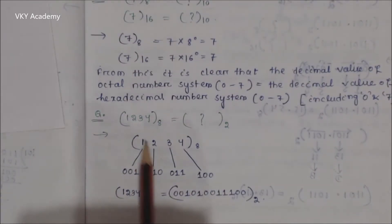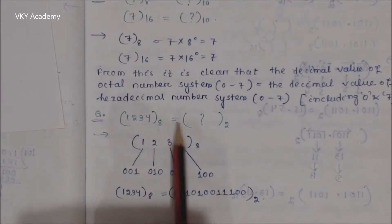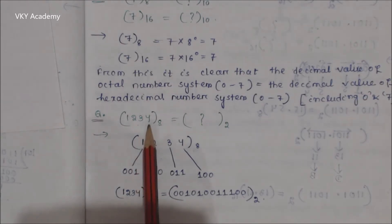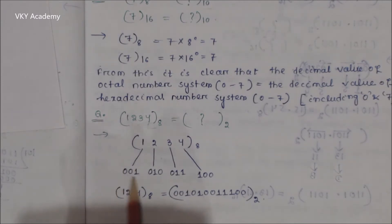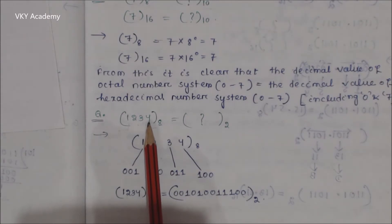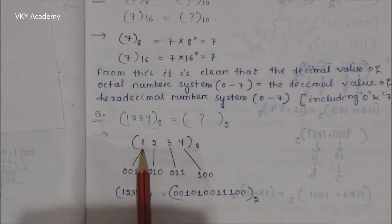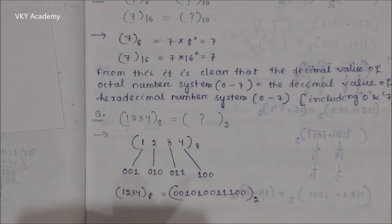Now let us solve a few examples. I have the octal number 1234 (base 8) and I need to convert it into binary. Since an octal number always has a group of 3 bits, from the least significant digit to the most significant digit we write the equivalent binary: 4 is 100, 3 is 011, 2 is 010, and 1 is 001. Writing all these bits together produces the equivalent binary number of this octal number. In this way we can convert any octal number into binary.